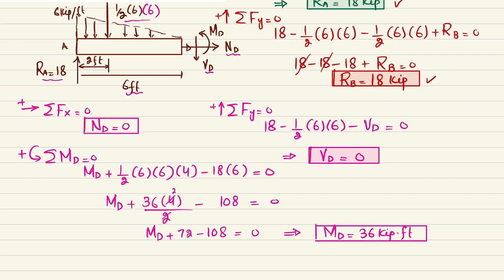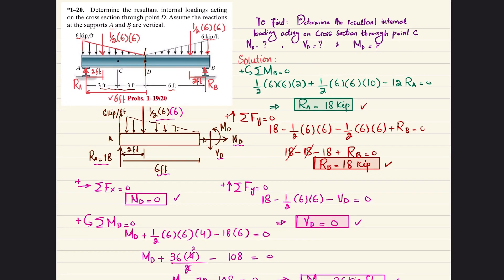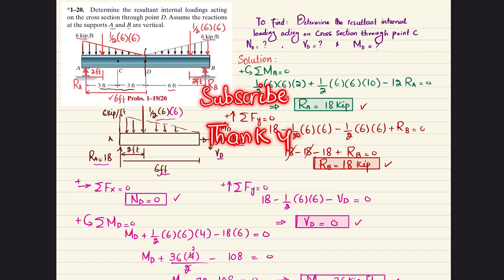To summarize, the internal loading at point D: ND = 0, VD = 0, and MD = 36 kip·feet. That concludes Problem 1-20. I hope you enjoyed and learned from this video. If you're new to the channel, please subscribe and hit the bell icon for notifications. Feel free to ask any questions in the comment section. Thank you for watching.